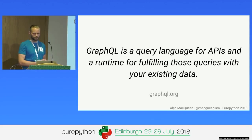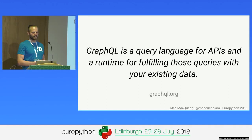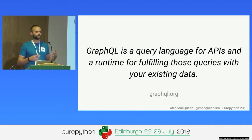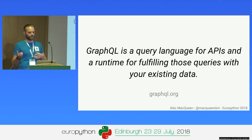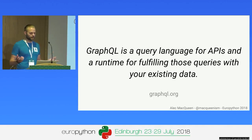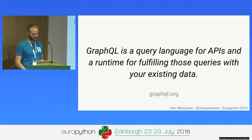That's still fairly vague. But in practice, what does that mean? As a developer, you're going to have to define some data types in your code. You need to create resolver functions to help you resolve those types against your existing data. Then you pass the whole lot into a runtime — and there's your API. That's pretty easy.